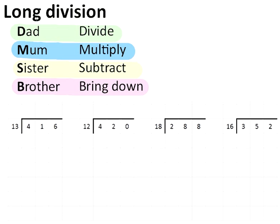I'm going to go through each of the four questions using these four steps. So to start with, divide, let's do 13 into 4, 13 into 4 doesn't go. So let's try 13 into 41, that goes three times. So that's the dividing bit done for that question.